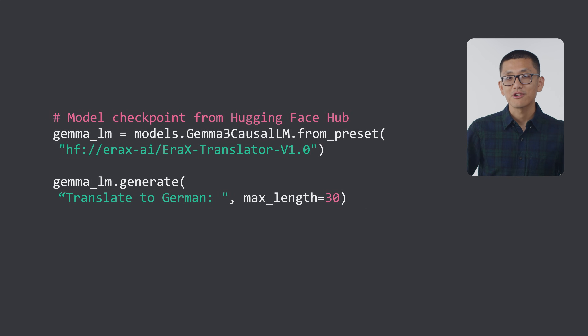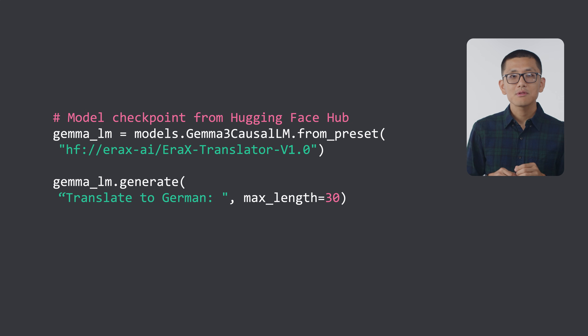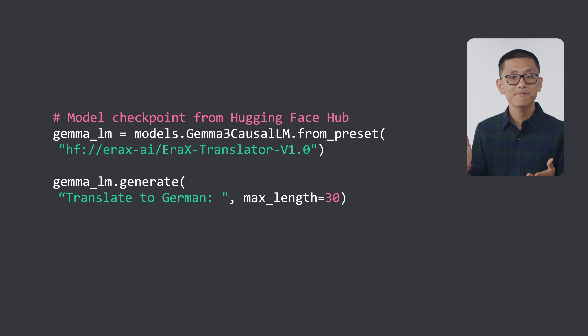They say three is a lucky number, so we'll do one more for good measure. Let's load a fine-tuned Gemma model that acts as a multilingual translator. We'll use the Gemma3CausalLM class and point it to the EraX translator checkpoint found on Hugging Face. And there you have it — three different models, three different community-made checkpoints, all loaded and run seamlessly with just a couple of lines of code each.